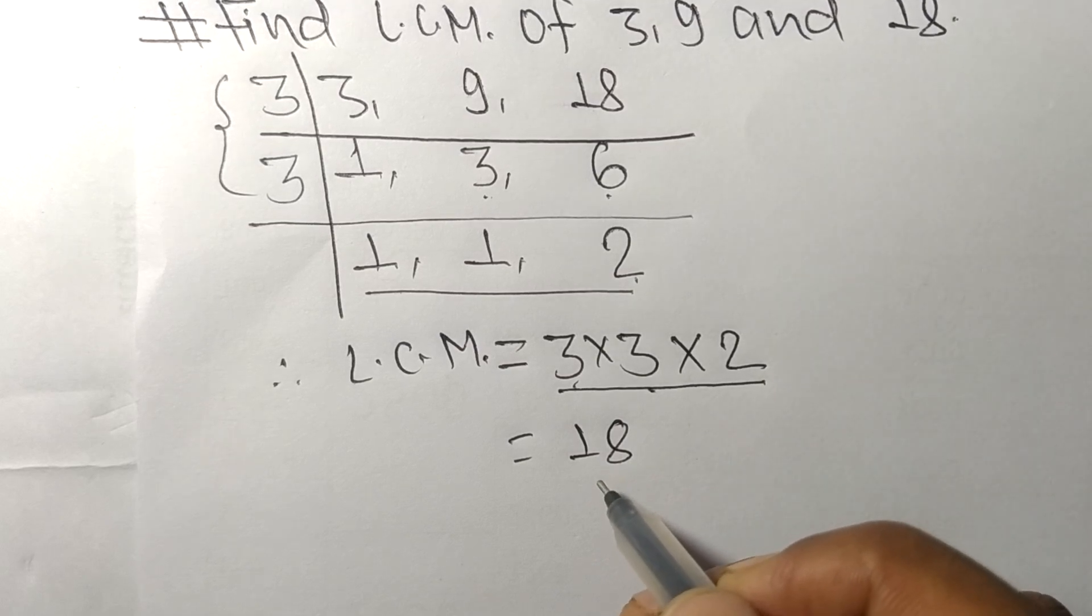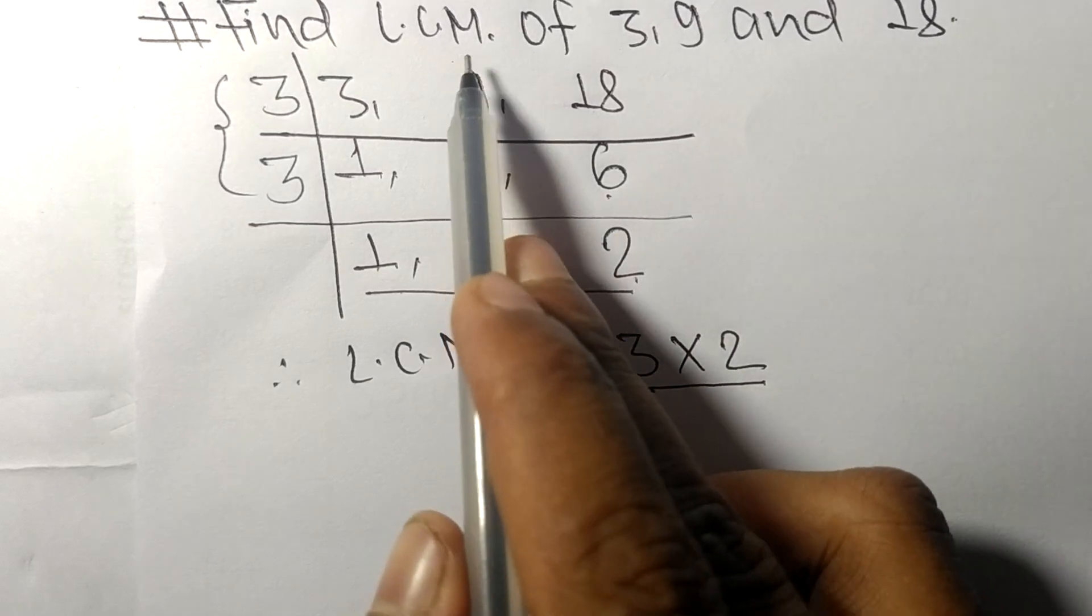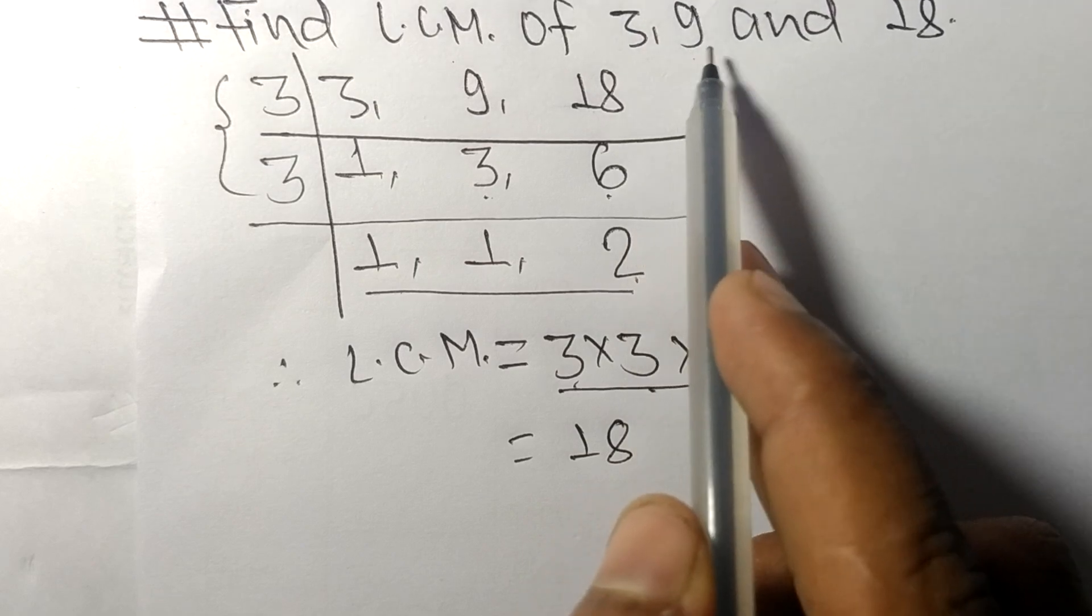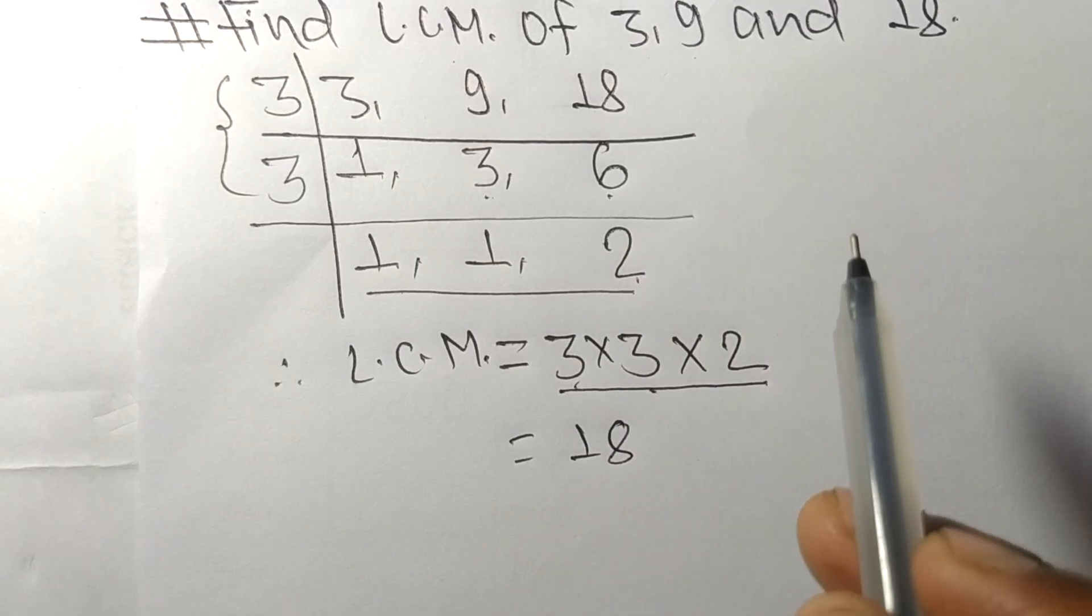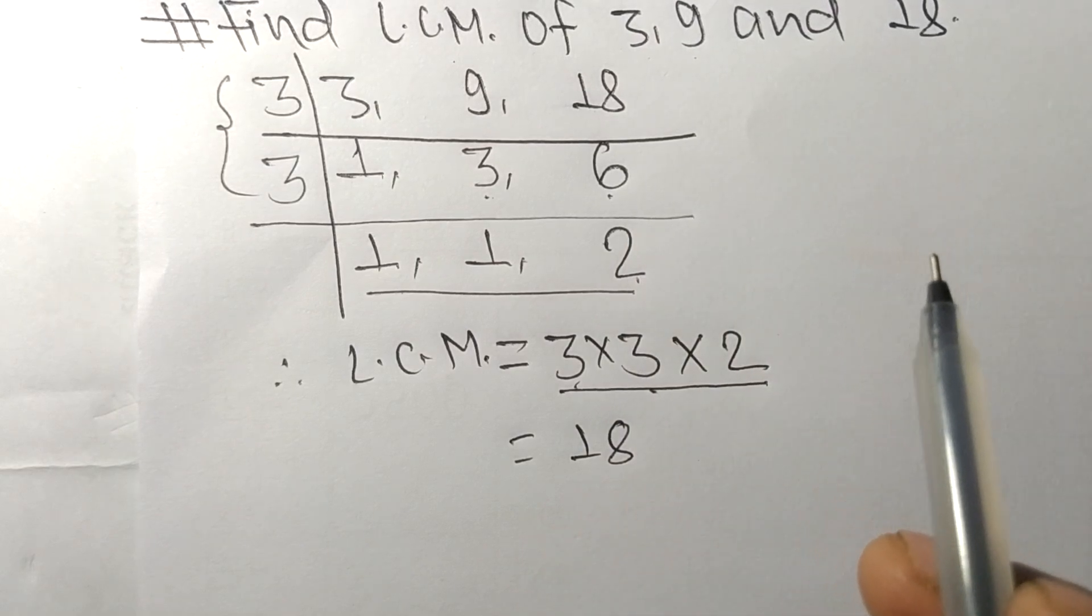So by multiplying all these numbers we got 18. So 18 is the LCM of 3, 9, and 18.